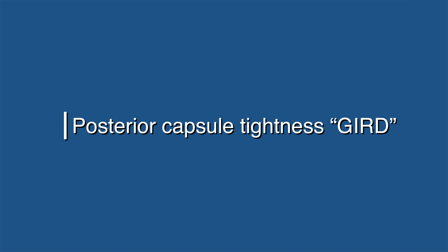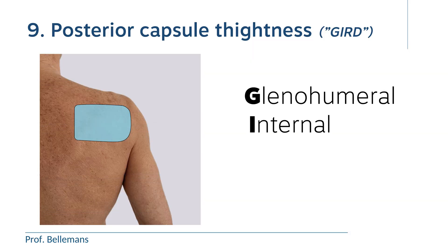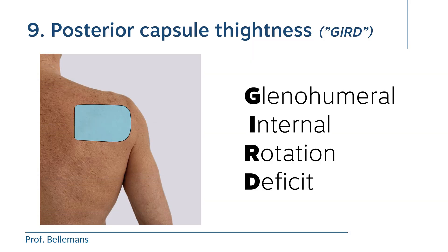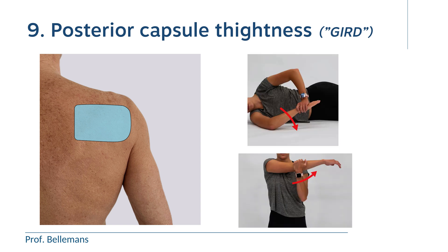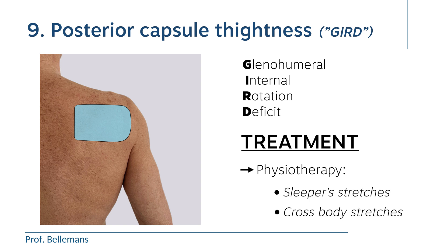Number nine: posterior capsule tightness, also called GIRD, which stands for glenohumeral internal rotation deficit. In this condition, the posterior capsule of the shoulder is shortened, which limits internal rotation and adduction of the shoulder. Treatment consists of physiotherapy with so-called sleeper stretches and cross-body stretches.